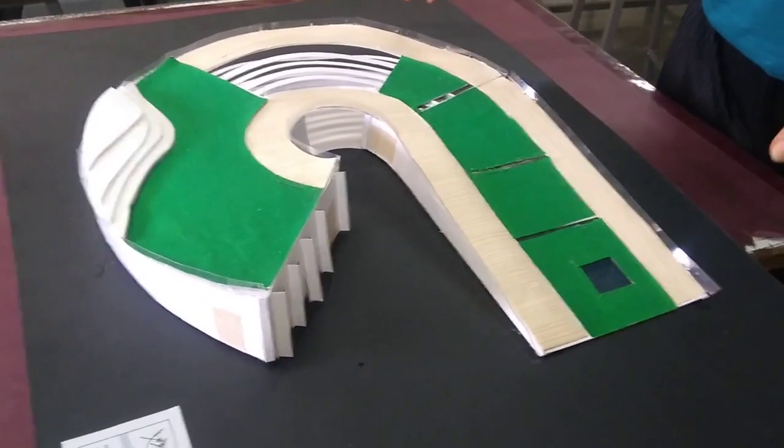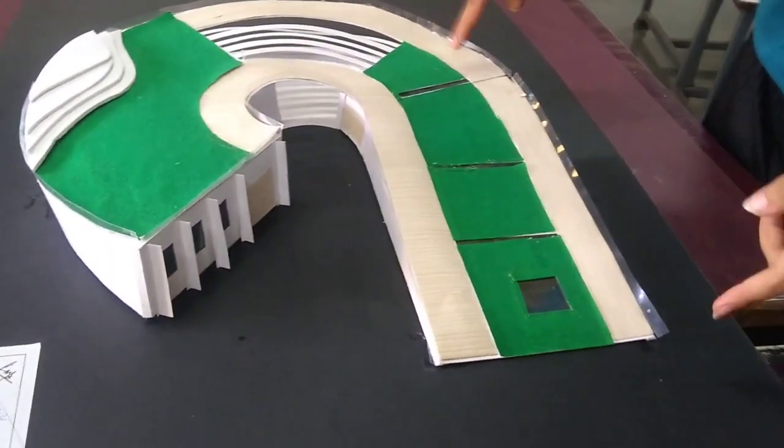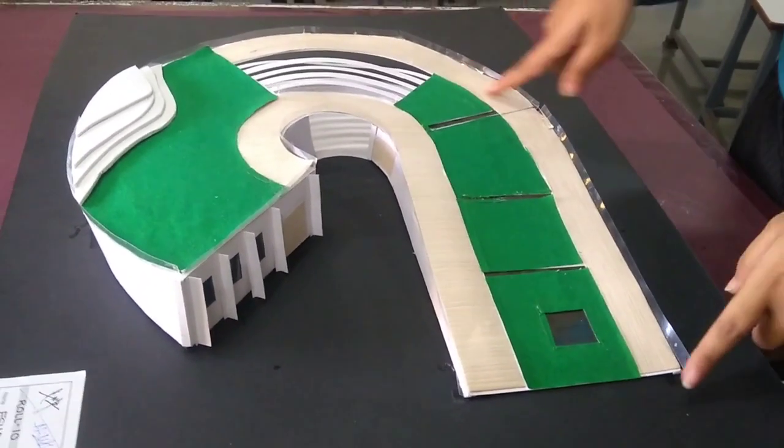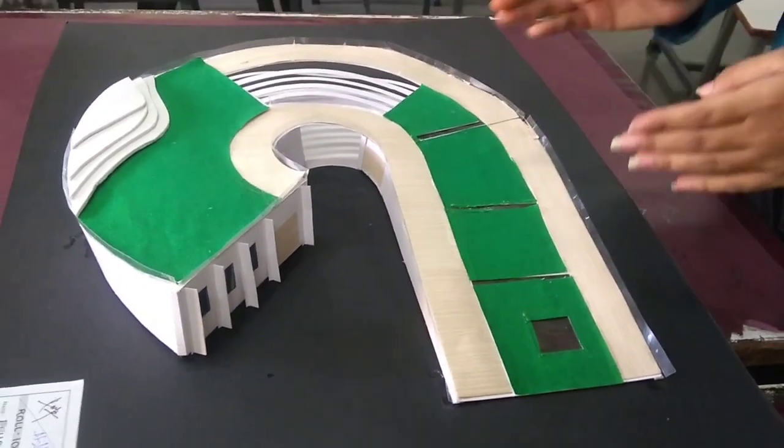This is a model of a tourist center that is designed in Chandigarh. There are two blocks. The model is divided into two blocks. This is the admin block, the art gallery, the souvenir shop.